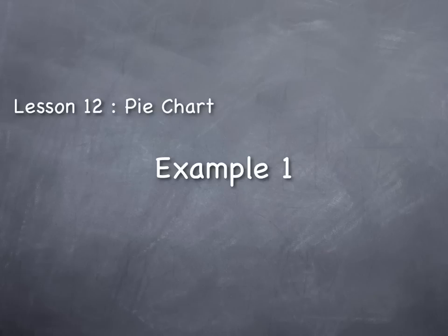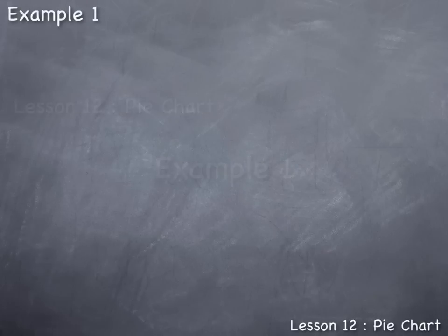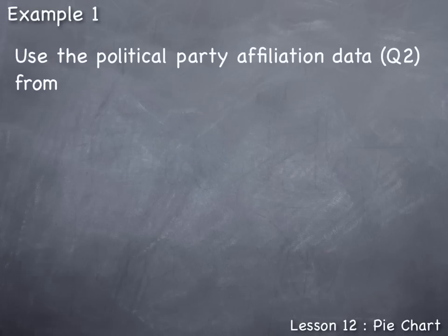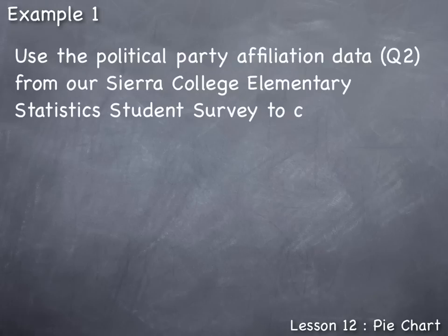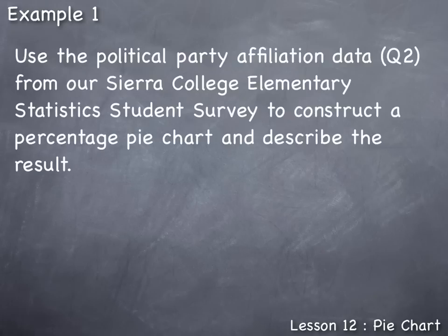Lesson 12, pie chart example 1. Use the political party affiliation data, question 2, from our Sierra College elementary statistics student survey to construct a percentage pie chart and describe the result. On this problem we're going to construct a percentage pie chart, which displays the data values along with their corresponding percentages. After we construct our pie chart, we will then describe the result using words to describe results that can be directly derived from the data.